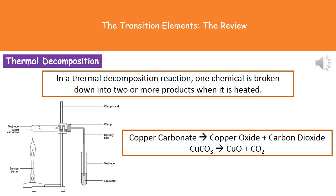When thinking about transition element compounds, one of the most common reactions asked about on your exam is thermal decomposition. In these reactions, we break one chemical into two or more products purely by heating it. You should have done an experiment in class, shown by the diagram in the bottom left corner. In that test tube we've put a transition metal compound — in this case a metal carbonate — connected to a bung with a delivery tube going into a test tube of lime water. We then heat the metal carbonate with a Bunsen burner on a blue flame.